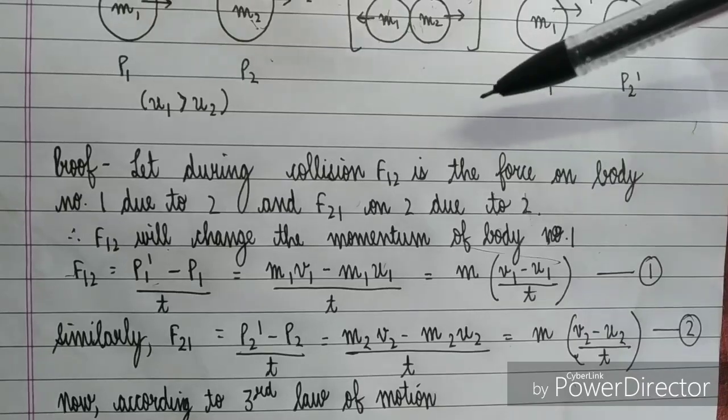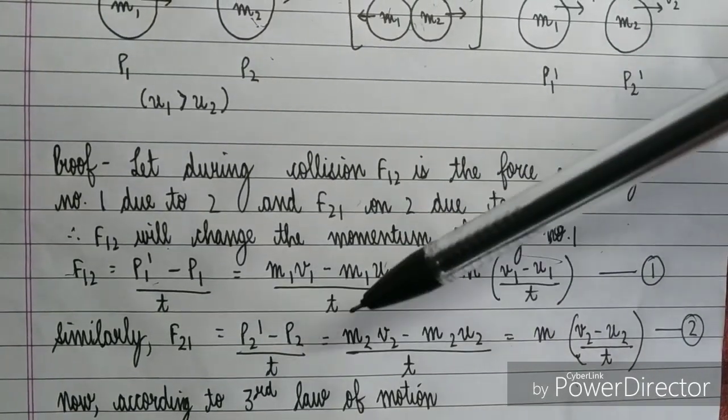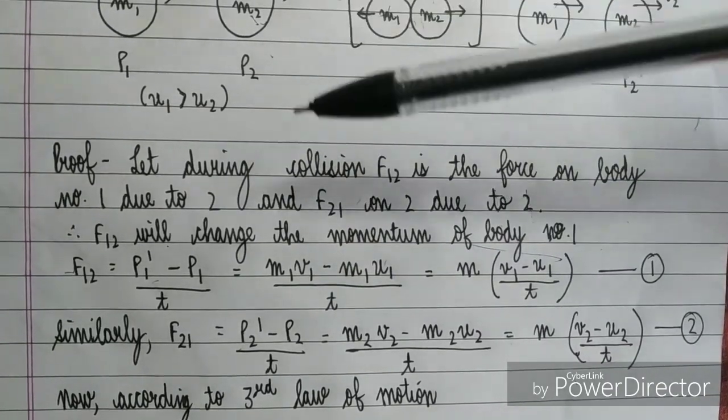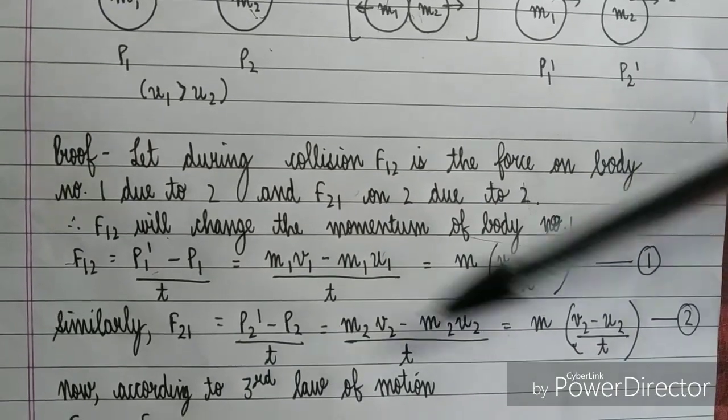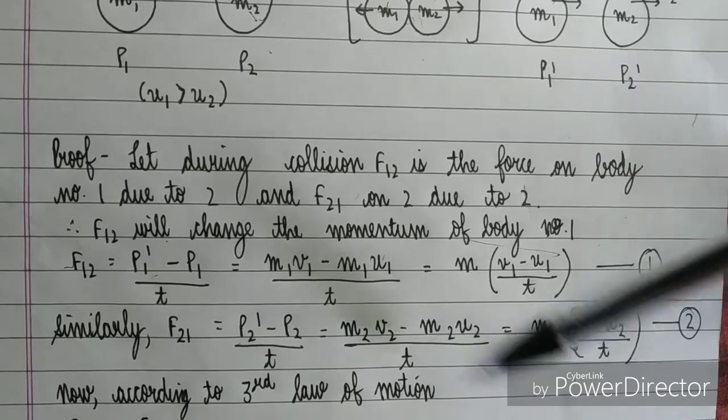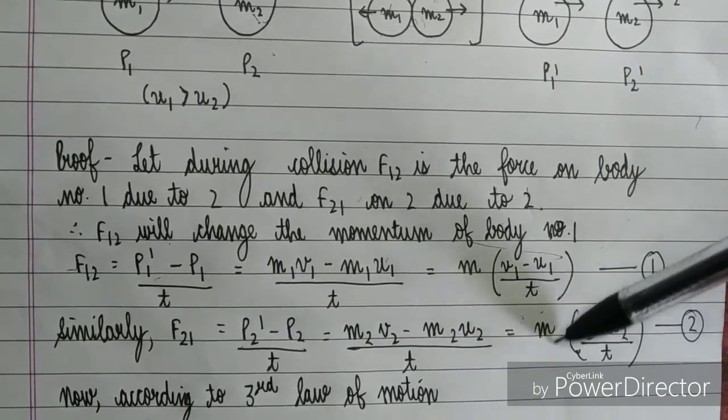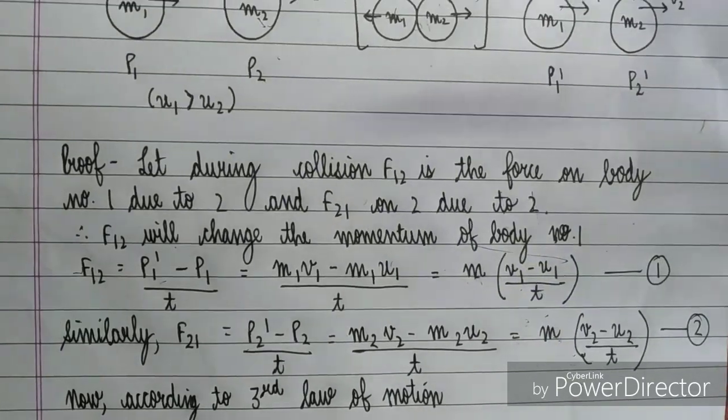Similarly, F21 will change the momentum of body number 2. So F21, which is the force, what will be the change in momentum? P2 dash minus P2 upon time taken. So we have put it here. M2 V2 minus M2 U2 upon time taken. So here, we have taken M2 common. This is our second equation.